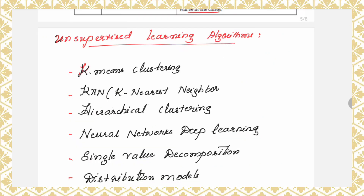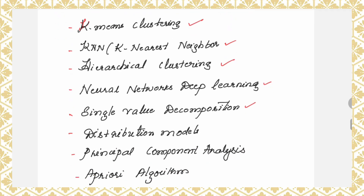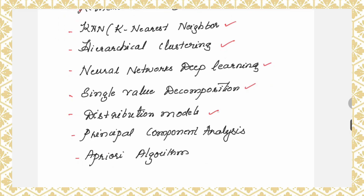The most popular algorithms under unsupervised learning are: K-means clustering, K-nearest neighbor, hierarchical clustering, neural networks and deep learning, singular value decomposition, distribution models, principal component analysis, and the Apriori algorithm.